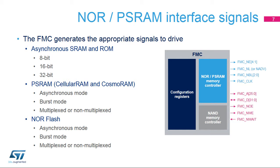The FMC outputs a unique chip select signal to each bank and performs only one access at a time to an external device. The external memories are connected either to the NOR PSRAM controller or the NAND controller and share address, data, and control signals.